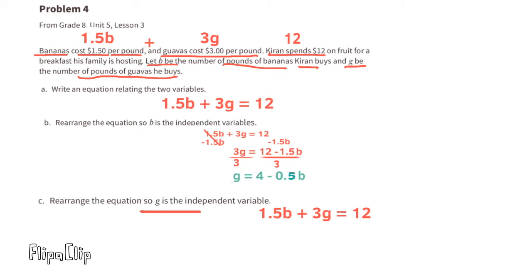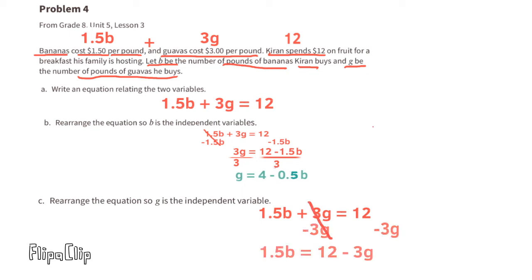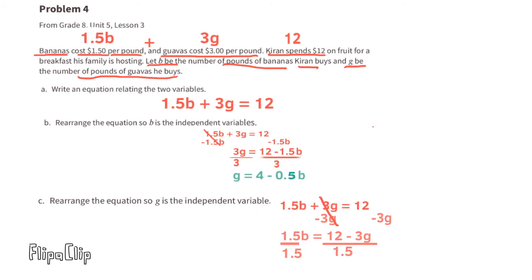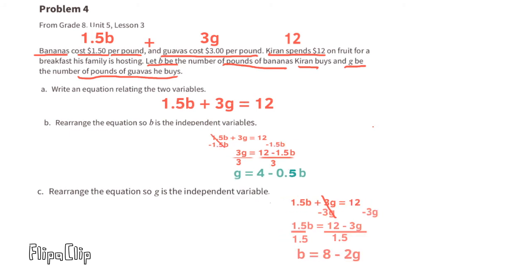C: Rearrange the equation so G is the independent variable. Now we need to get B by itself. Subtract 3G from both sides, and the equation reads 1.5B equals 12 minus 3G. Divide both sides by 1.5 to get 1B, and you have B equals 8 minus 2G.